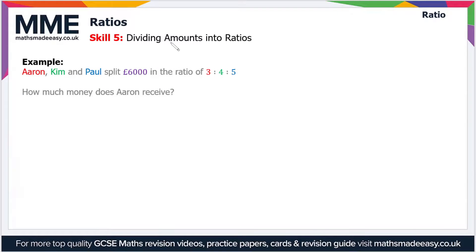Welcome to the Maths Made Easy tutorial on ratios. This is the third video on this topic, so we'll look at a couple more skills. Starting with dividing amounts into ratios: Aaron, Kim, and Paul split £6000 in the ratio of 3:4:5. How much money does Aaron receive?